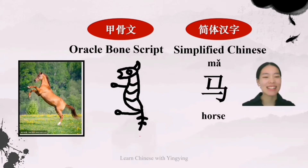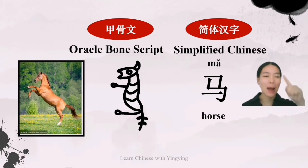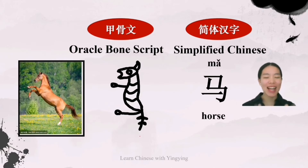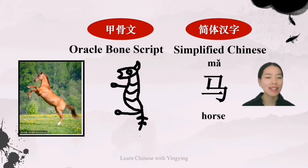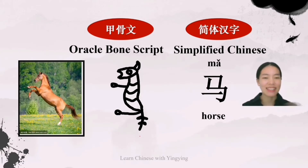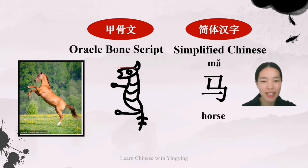Here is the simplified Chinese, pronounced as 马 (mǎ). It means horse. Look at these two characters — you can see the shape doesn't change a lot, but the simplified Chinese is just simpler, right? Square and straight and neat. Let's see how the word evolved into the simplified Chinese. Here is the head of it and here is the body of it.